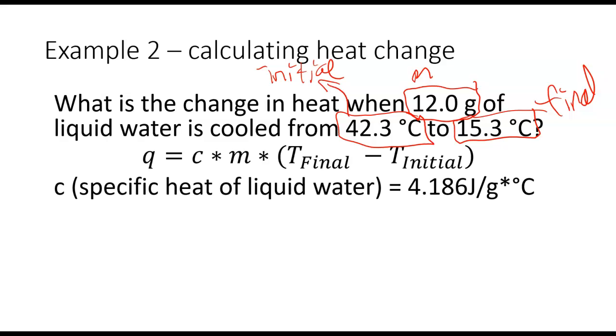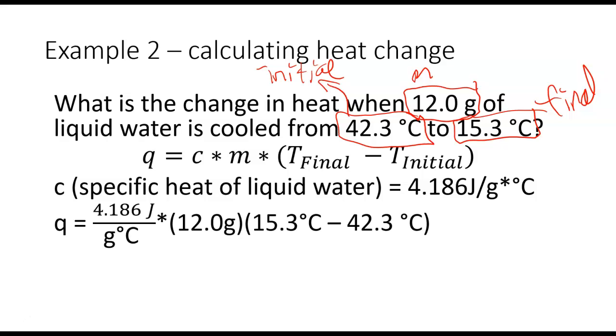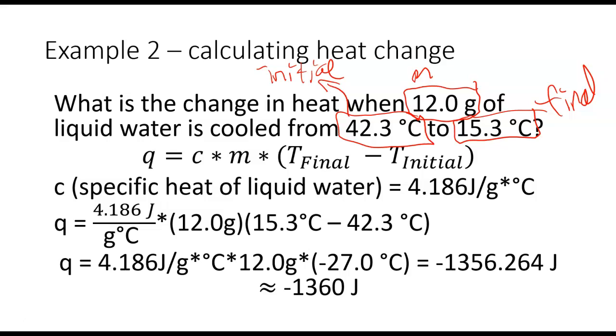I plug in my values into my equation. So notice I have 15.3 degrees Celsius minus 42.3 degrees Celsius here. When I subtract those, I get a negative value, negative 27.0 degrees Celsius. My Q here ends up being negative 1,360 joules. Notice it is negative. The other was positive.